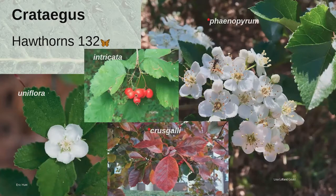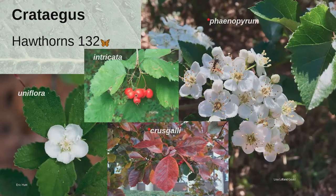Crataegus, the hawthorns, can be disease-ridden, and they have thorns — which is why they're called hawthorns. Crataegus phaenopyrum, Washington hawthorn, grows 25 to 30 feet in sun with medium soil moisture. It can be cut as a hedge, used as a street tree or flowering tree; it does have thorns, has very good fall color, and is one of the most disease-resistant of the hawthorns.